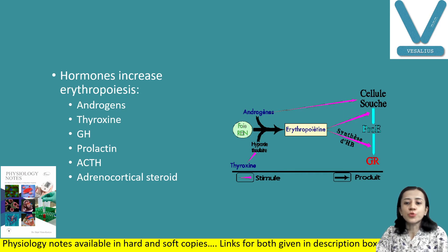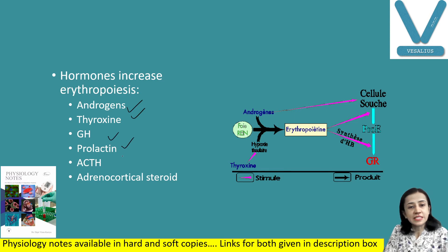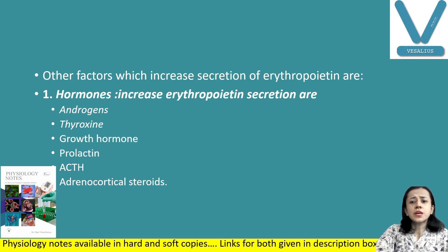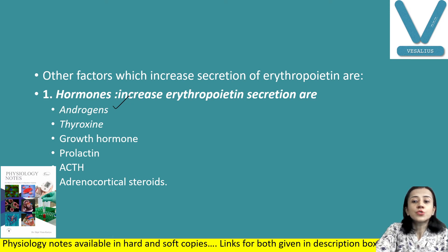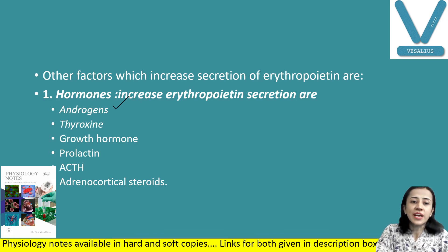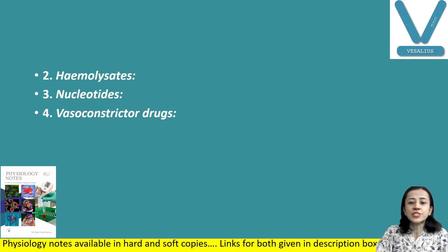Hormones that increase erythropoietin secretion include androgens, thyroxine (as a metabolic hormone), growth hormone, prolactin, ACTH, and adrenocortical steroids. Hemolysates also increase erythropoietin secretion. Nucleotides such as cyclic AMP, NAD, and NADPH also increase erythropoietin secretion, as do vasoconstrictor agents like sympathetic stimulation.